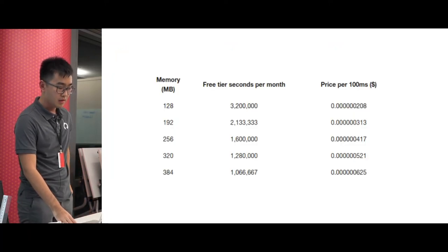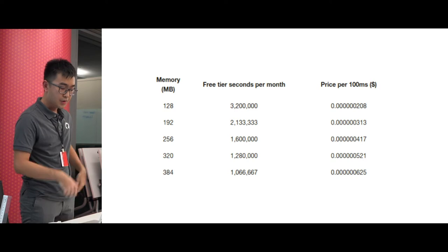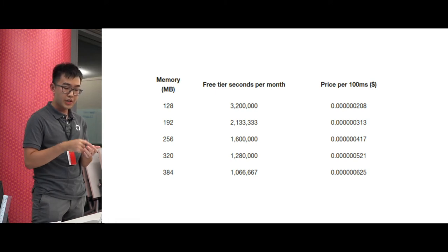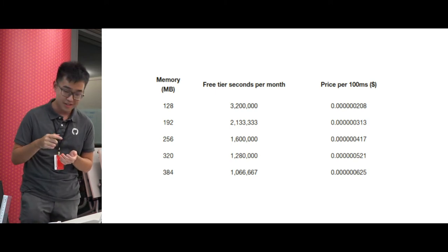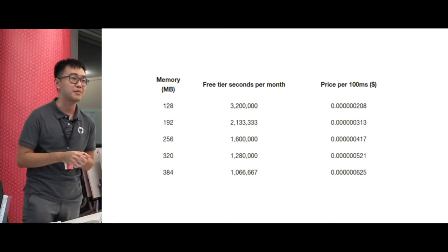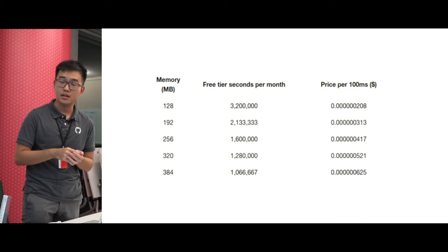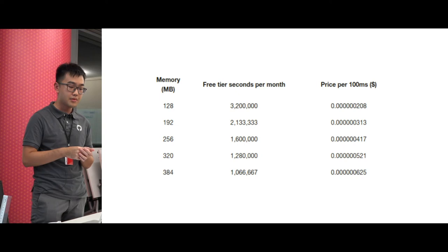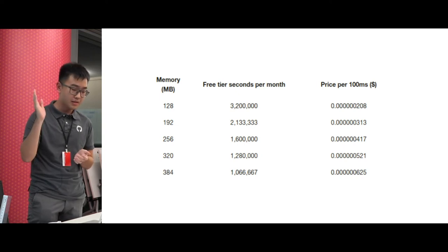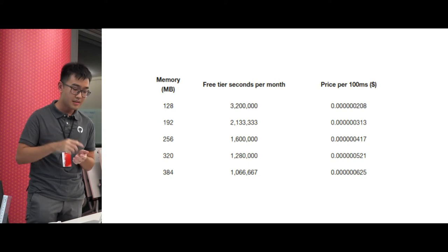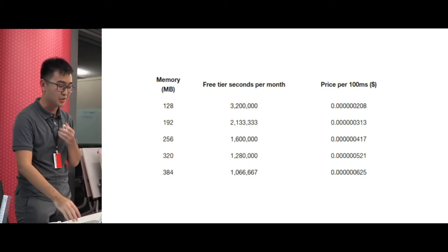For AWS Lambda, if you have a function with 128 megabytes of memory, each 100 milliseconds costs a very small amount — it's very cheap. And since you have a free quota of Lambda execution time every month, you get a certain number of seconds of Lambda execution time for free.